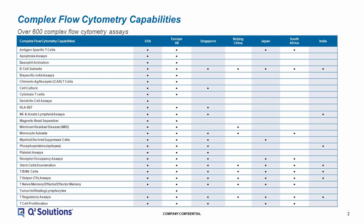Since 2012, we have validated almost 700 flow cytometry assays. Currently, there are over 300 active assays in our catalog available for use. Many of the assays we have validated are custom fit-for-purpose assays that are sponsor and trial specific. There are a broad range of assays we routinely perform that includes simple lineage and subset enumeration, as well as proliferation, activation, exhaustion, and functional assays for T-cell, B-cell, NK, and innate lymphoid cells, monocytes, macrophages, as well as neutrophils, eosinophils, and basophils.